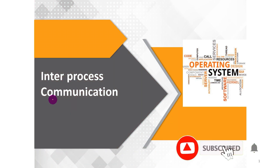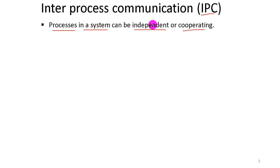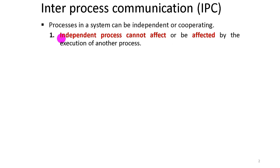Inter-Process Communication in Process Management — Operating System, Chapter 2: Inter-Process Communication. Processes in a system can be independent or cooperating. An independent process cannot affect other processes and is executed independently from a group of other processes.